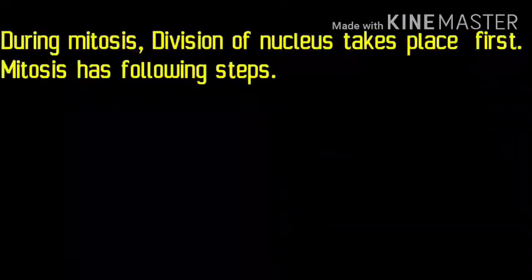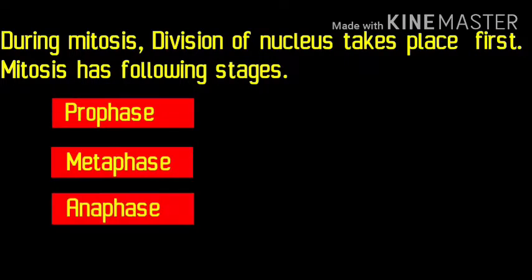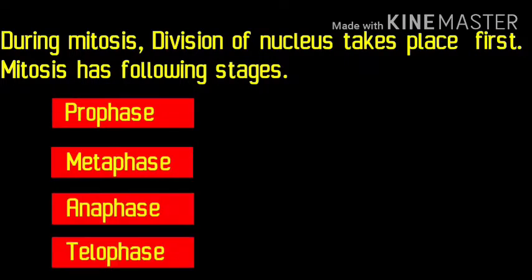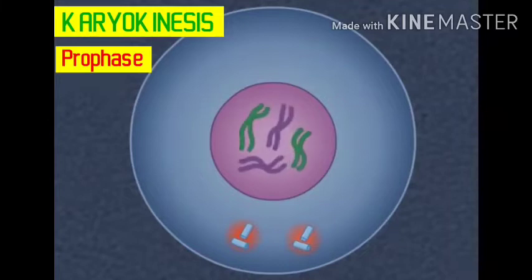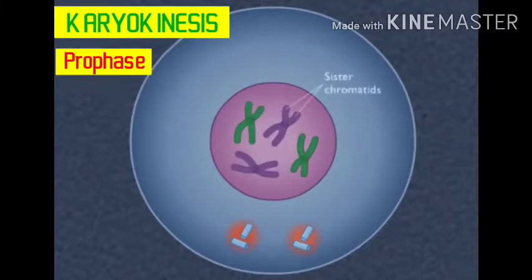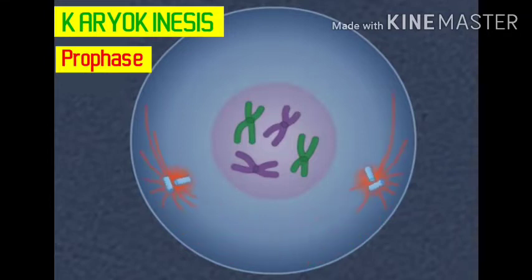Mitosis has the following steps: prophase, metaphase, anaphase, and telophase. During prophase, chromatin reticulum condenses to form chromosomes. Nuclear membrane and nucleolus disappear, and spindle fibers are formed.